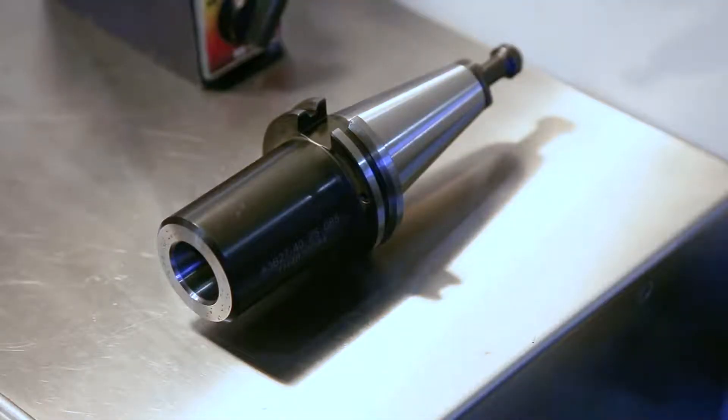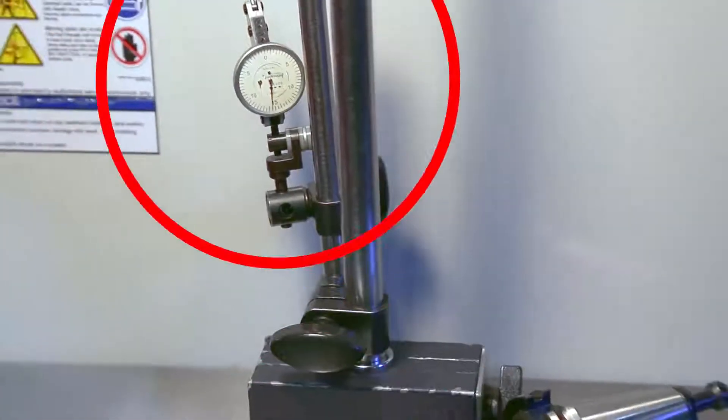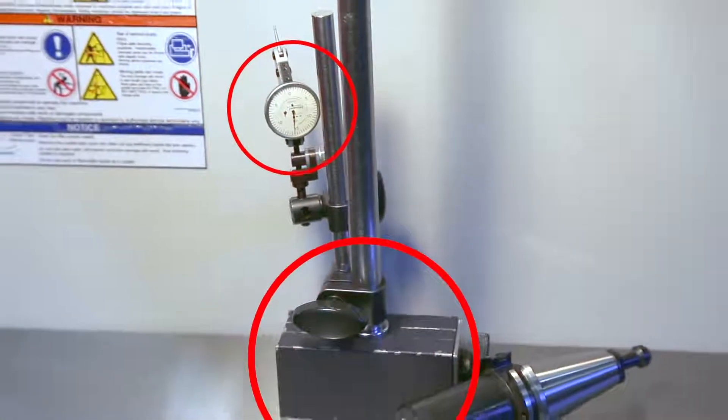Setting the tool change offset is not difficult. You'll need a blank tool holder with a flat bottom face, a 5 tenths indicator, and a mag base to do this job.